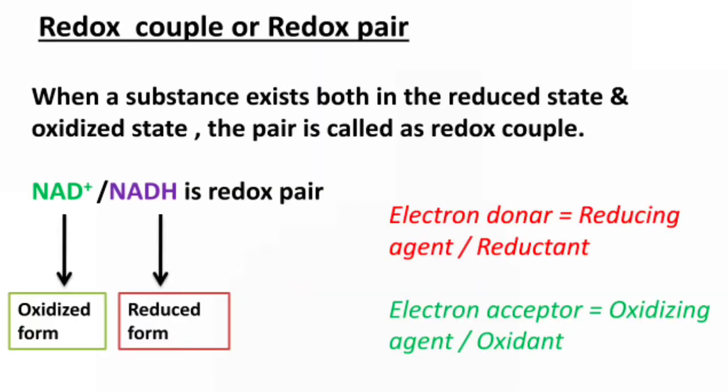Coming to the meaning of Redox Couple or Redox Pair: when a substance exists both in the reduced state and oxidized state, the pair is called as Redox Pair or Redox Couple. For example, NAD+ and NADH is a Redox Pair. In this pair, NAD+ is the oxidized form and NADH is the reduced form.